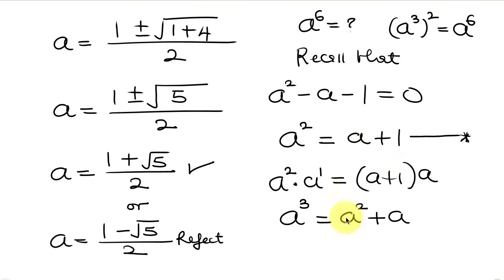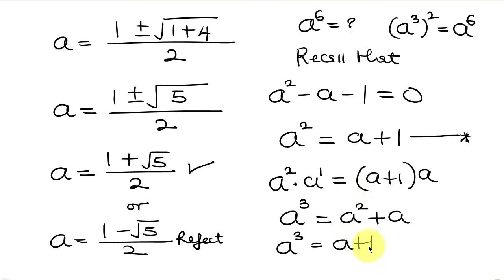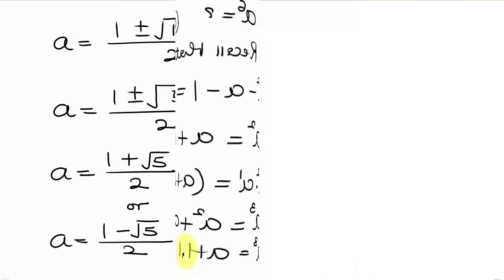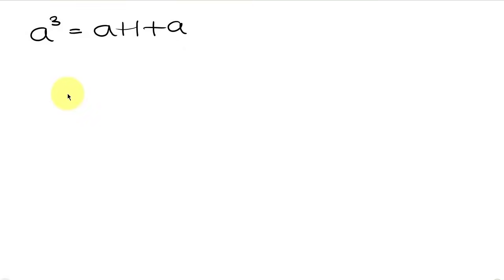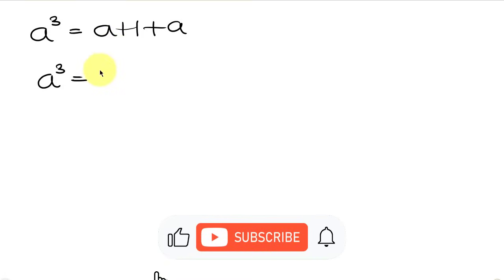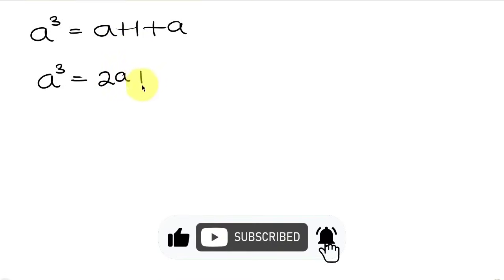So A cubed becomes A squared — which we replace with A plus 1 — and then plus A. Simplifying, we get A cubed equal to A plus A plus 1, which is 2A plus 1.